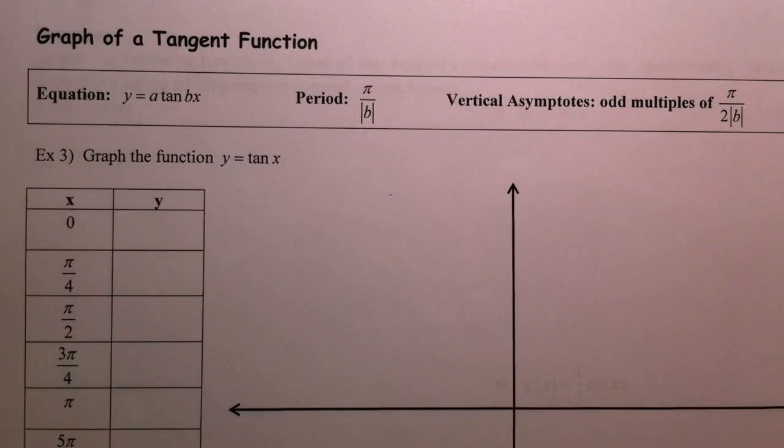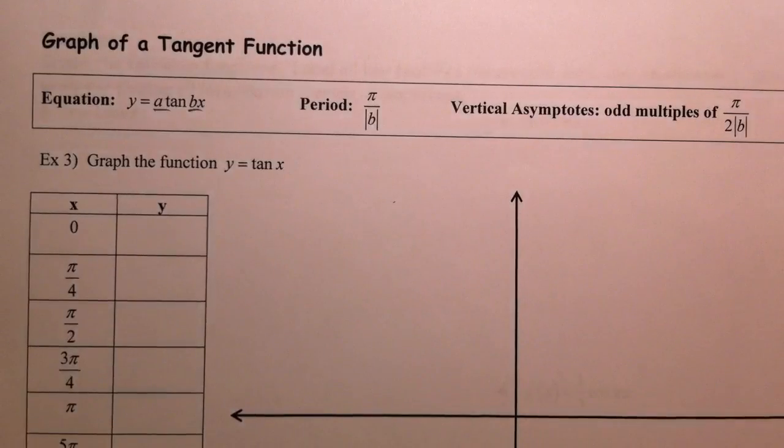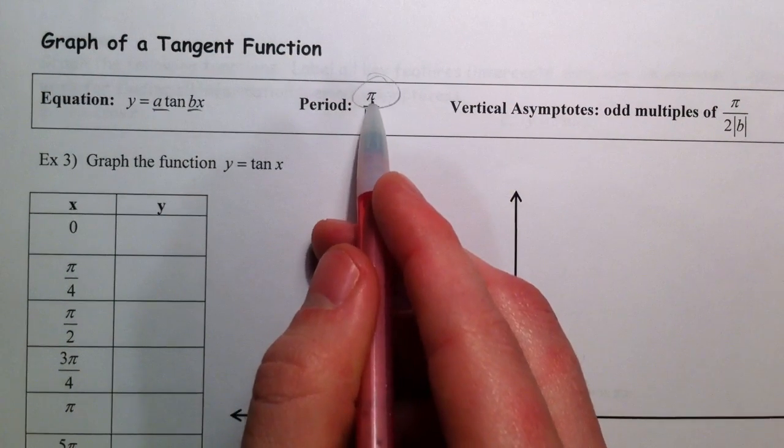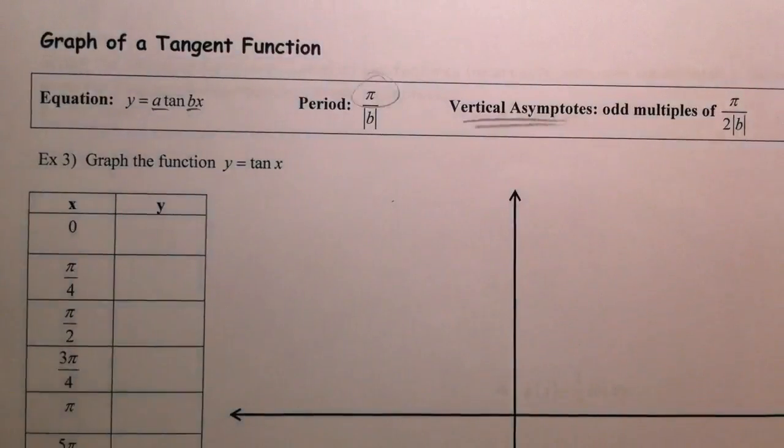On to the tangent function. The first thing we notice is that A and B are still there, same kind of deal, but the period is going to be different. It starts at pi, and we're also going to have some vertical asymptotes.